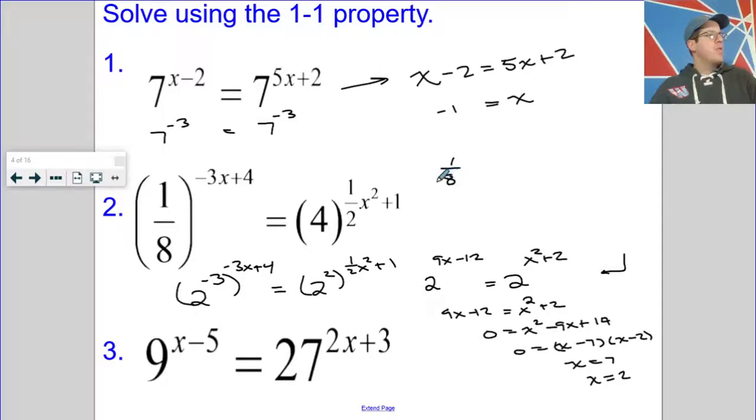1 eighth to the, let's check 2 first. So if I plug in 2, I'm going to get negative 6 plus 4. That's negative 2. That's going to be 64 equals 4 to the, well, 2 squared is 4 divided by 2 is 2 plus 1, is 3. That gives me 64. That does work.